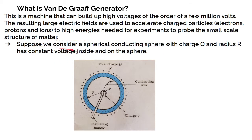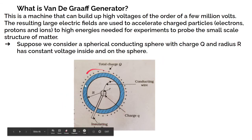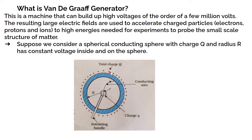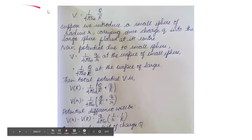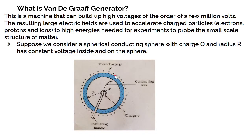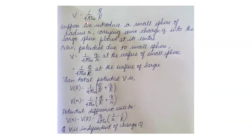Consider a spherical conducting sphere with charge Q and radius R. This sphere has constant voltage inside and on its surface. The potential at a point on the surface is given by V = (1/4πε₀) × (Q/R).